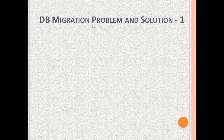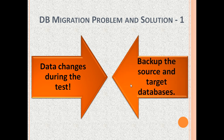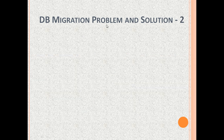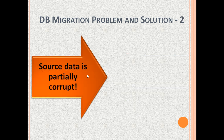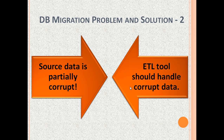Now let us see some potential problems and solutions in database migration testing or ETL testing. The first challenge is that the source data may change during the test. The possible solution is that we should back up the source and target databases — this would help if we need to restart the database migration. The second problem is that the source data is partially corrupt; for example, some source data is incomplete or contains junk values. The possible solution is that the ETL tool should handle the corrupt data, and our validation test should confirm the ETL's handling of corrupt data.